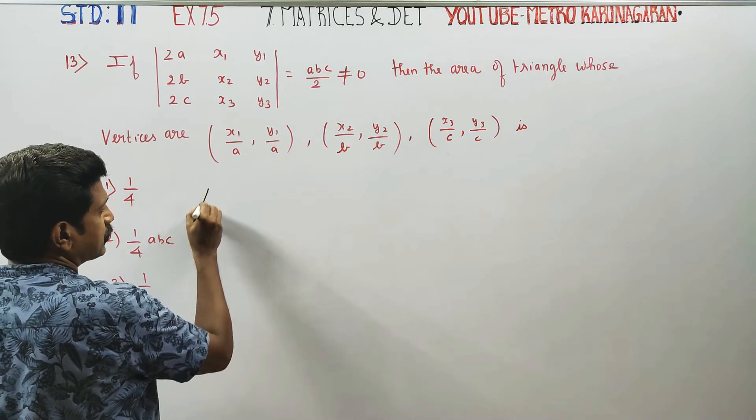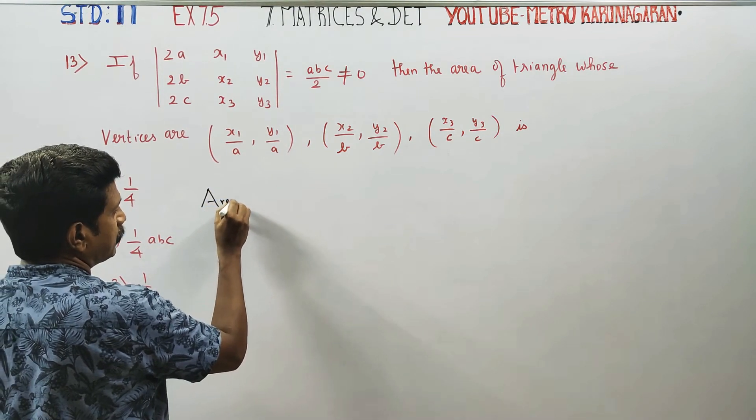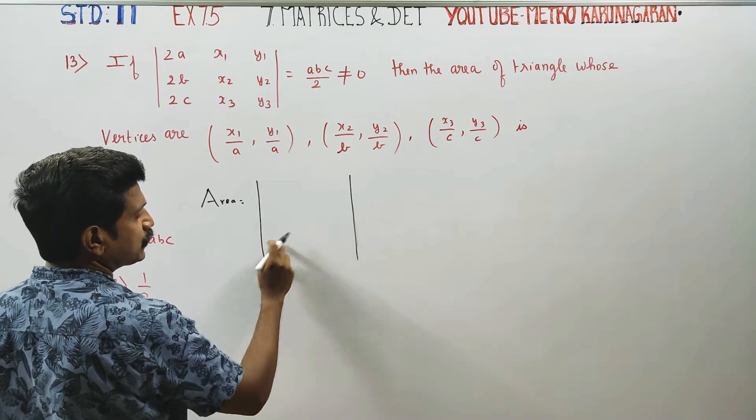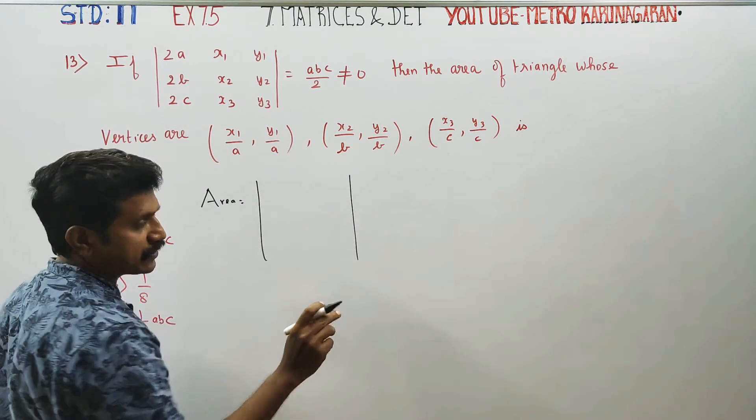Area of the triangle formula: we use coordinates x1, y1, x2, y2, x3, y3 in a determinant, multiplied by one half.